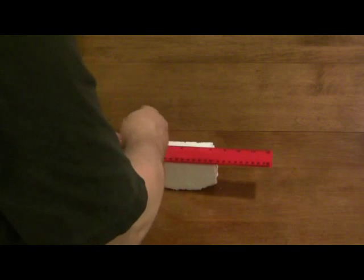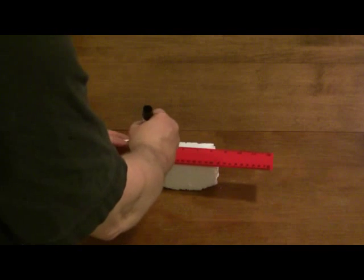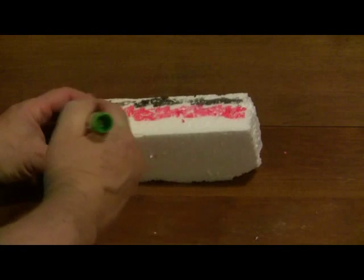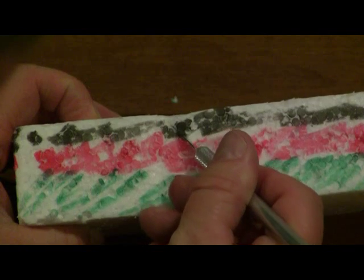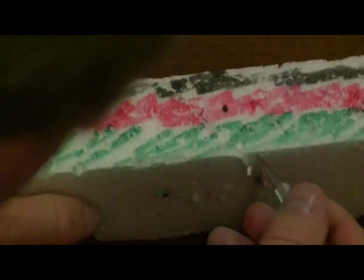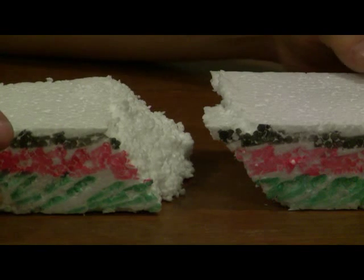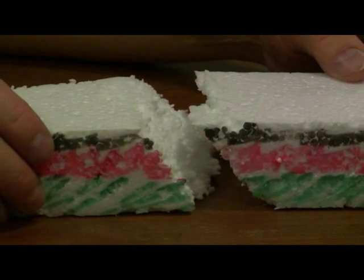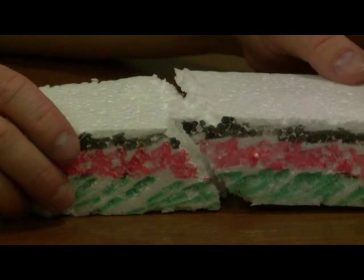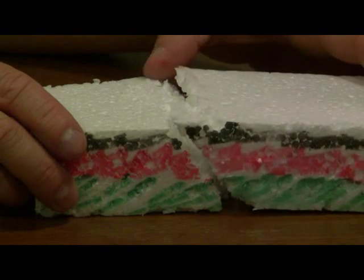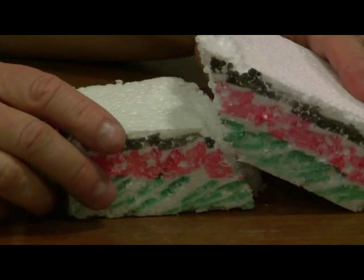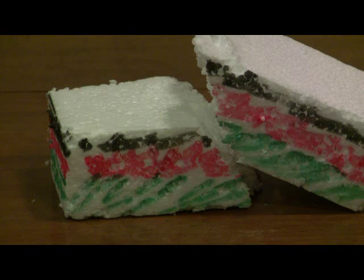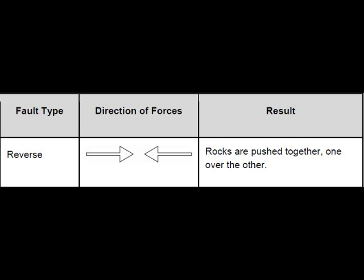You're going to start out by making a model of a reverse fault. Take some styrofoam and use colored pencils or markers to create at least three horizontal layers on the sides of your blocks. Have an adult help you cut the block into two pieces at an angle. Next, place the two cut blocks together face to face. The left block is block B, the right block is block A. The side where the two cut surfaces touch is the fault line. Slowly push the two pieces together so that block A slides upward. You've just modeled a reverse fault. Reverse faults are formed from pushing forces, also called compression forces.